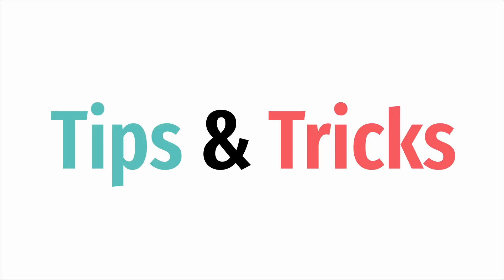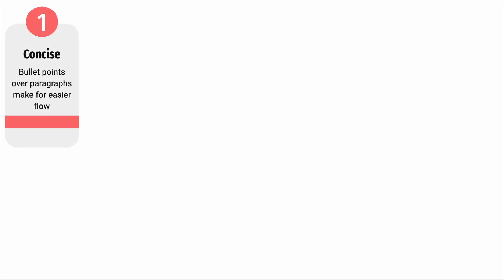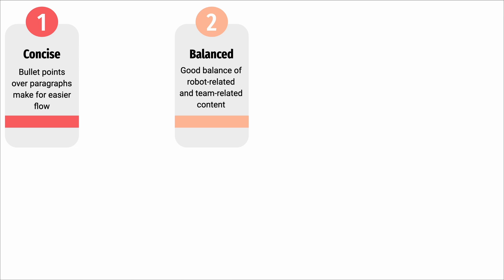Moving on, we're just going to cover some tips and tricks for curating an engineering portfolio in the most efficient way possible. It's important to note that your main engineering portfolio has a maximum of 15 pages, 16 including the cover page your team can have. Number one, conciseness is key. Keep your information on every page short and simple. Don't write multiple paragraphs per page; instead, conveying your information through bullet points would be much easier to comprehend for both you, your team, and judges. Number two, have a good balance of robot-related and team-related content in your portfolio. Don't overflow your portfolio with 10 pages of programming information or 10 pages of your team's outreach. Make sure there's a good balance between them because both are equally important to being a well-rounded team.